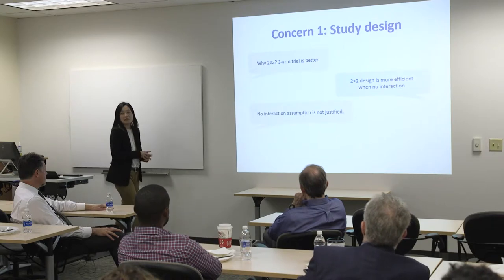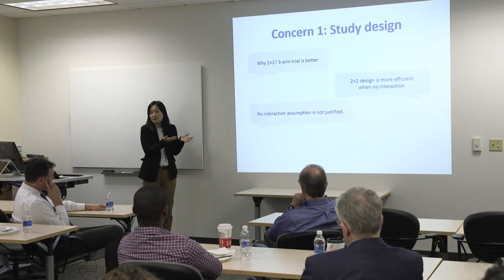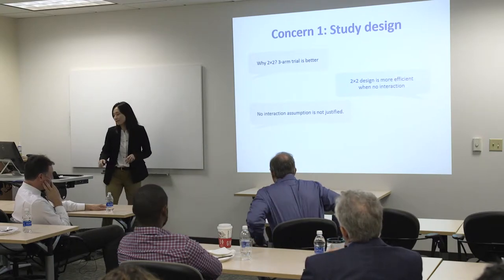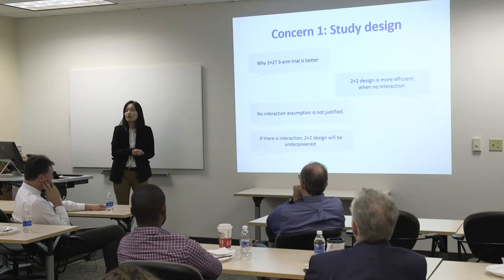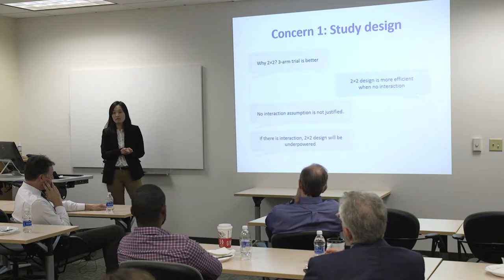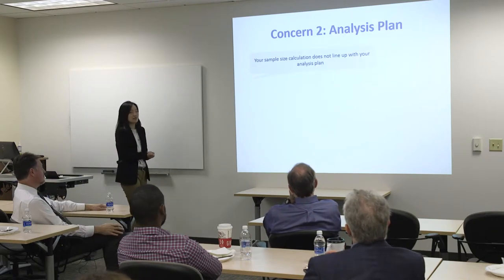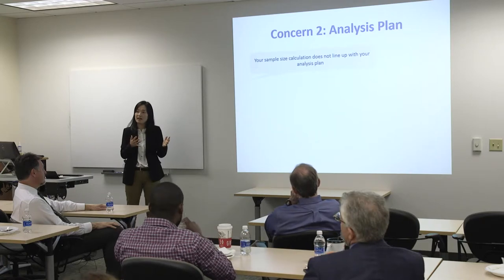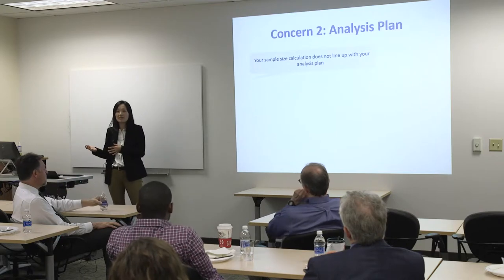Their second criticism was that the no-interaction assumption is not really justified, which is kind of true — we really don't know if there will be an interaction or not. She also said if there is an interaction, then your 2x2 design might be underpowered, which is also a valid point. Another concern the reviewer had was that our proposed analysis plan is piecewise logistic regression, but we calculated power based on chi-square test, so these two don't agree with each other.